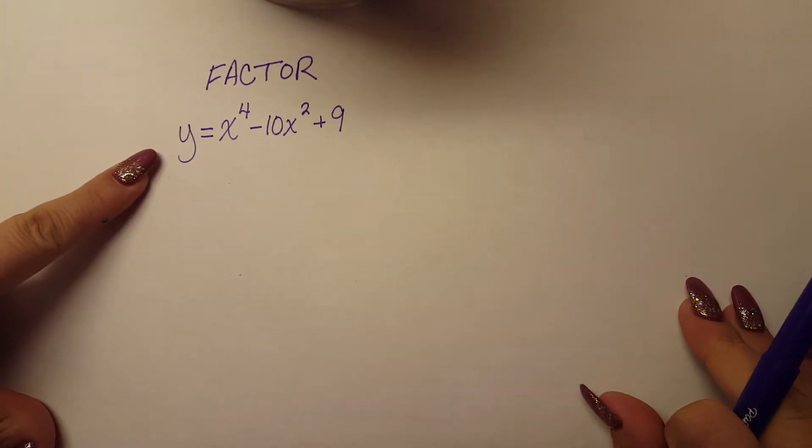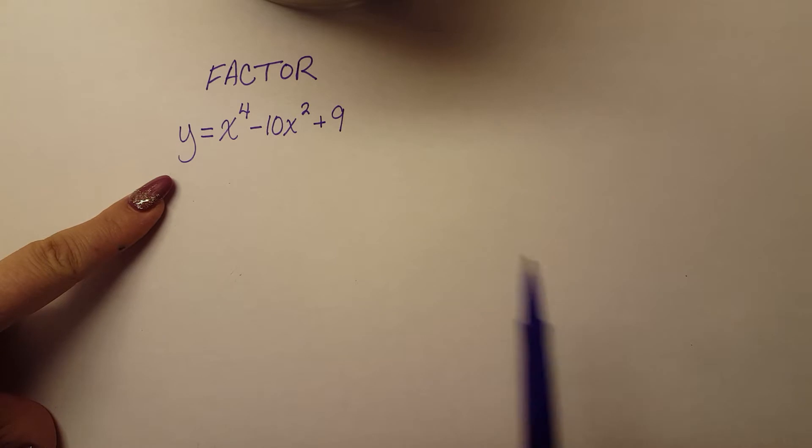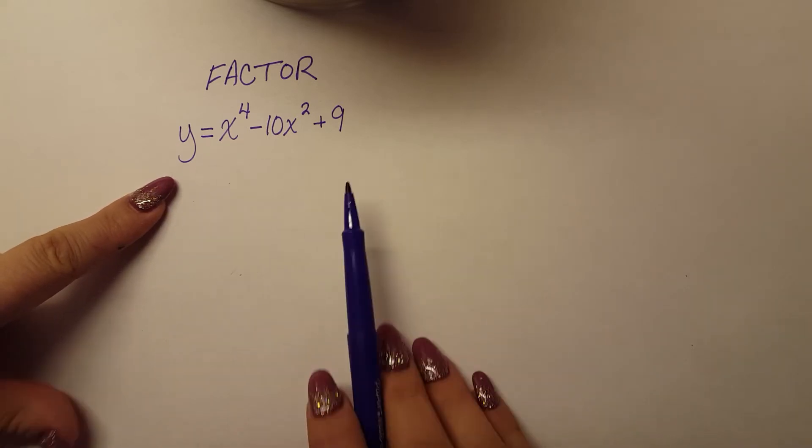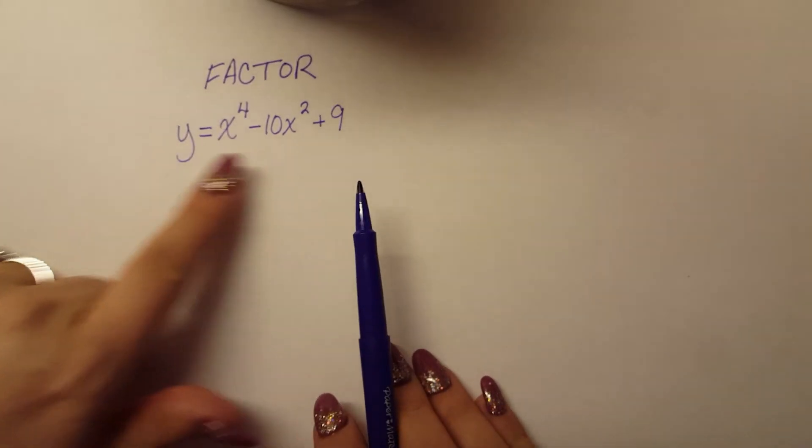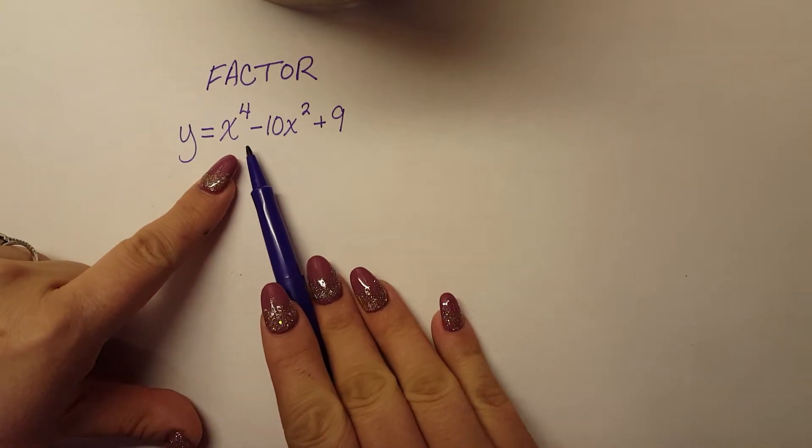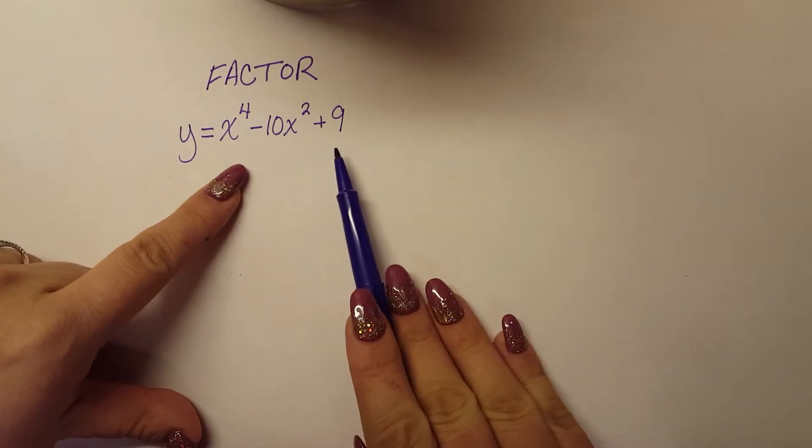Okay, today we're going to practice some factoring with polynomials. In this particular case, we have a trinomial, so we have y equals x to the fourth minus 10x squared plus 9.